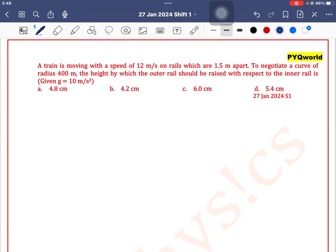A train is moving with a speed of 12 meters per second on rails which are 1.5 meters apart.